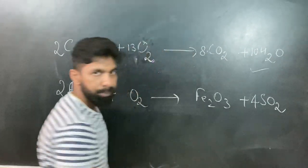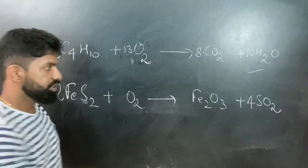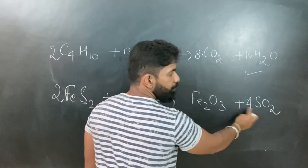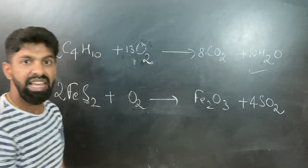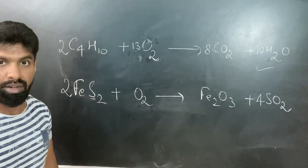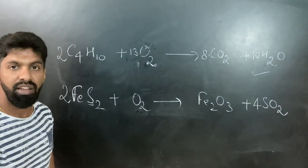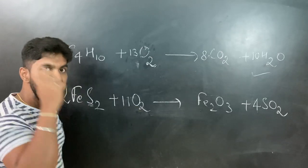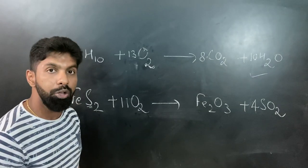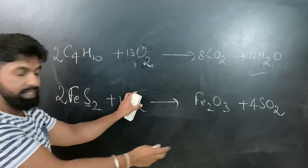Now the only thing that remains is oxygen. So 3 plus 4 times 2 is 8 - 4 times 2 is 8 plus 3 is 11. So what into 2 will give me 11? We all know it is 11 by 2. I write the 11 here, I keep the by 2 in my mind.